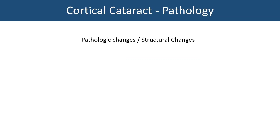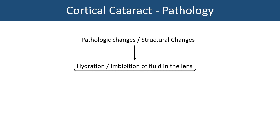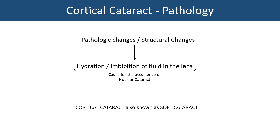Now we'll see the pathology of cortical cataract — the pathologic and structural changes which lead to its formation. The main process involved is hydration, or imbibition of fluid into the lens. When fluid flows inside the lens, the lens becomes soft. So morphologically, cortical cataract is soft and is also known as soft cataract — the opposite of nuclear cataract, which is hard in nature.